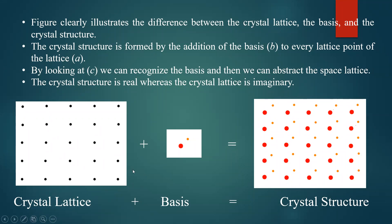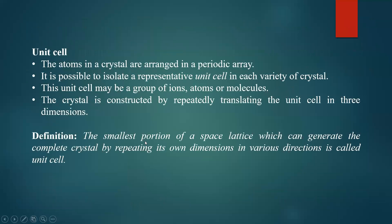Note the difference between basis and unit cell. The unit cell is the smallest portion in the crystal lattice — repetition of that unit cell gives the entire crystal structure. Basis is a structural unit that may be a group of atoms or group of molecules. Unit cell is the smallest portion of space lattice which can generate the complete crystal by repeating its own dimensions along various directions.